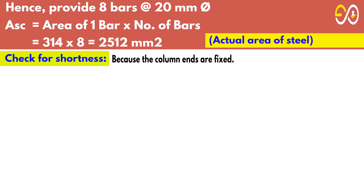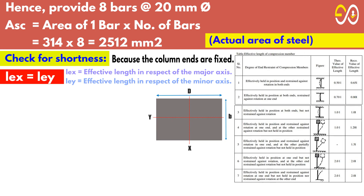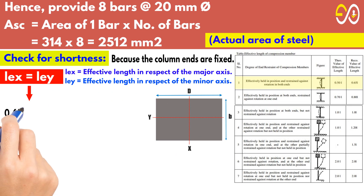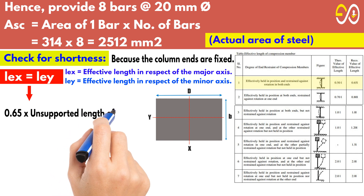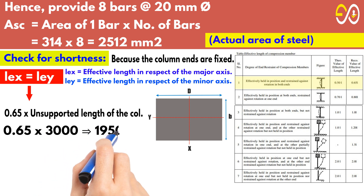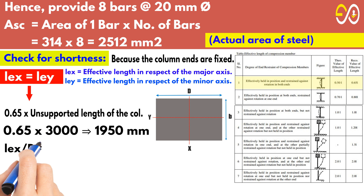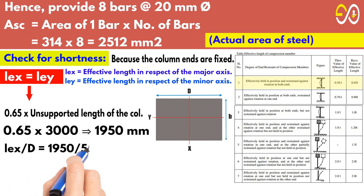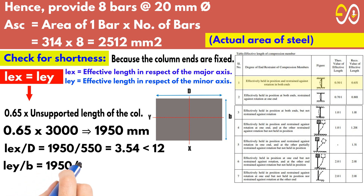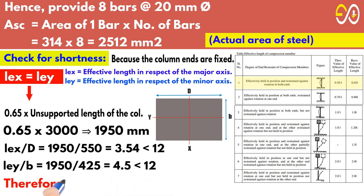Check for shortness. Because the column ends are fixed, effective length in respect of the major axis equals effective length in respect of the minor axis equals 0.65 times unsupported length of the column equals 0.65 times 3,000 equals 1,950 millimeters. Effective length over D equals 1,950 over 550 equals 3.54, less than 12. Effective length over B equals 1,950 over 425 equals 4.5, less than 12. Therefore, column is short.